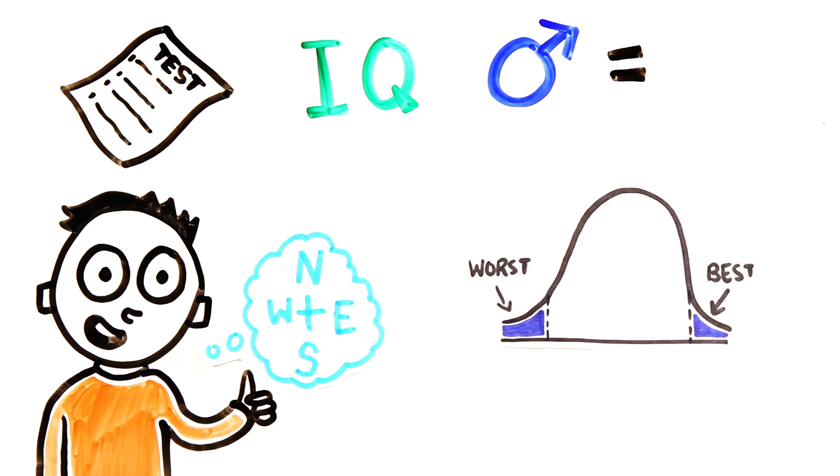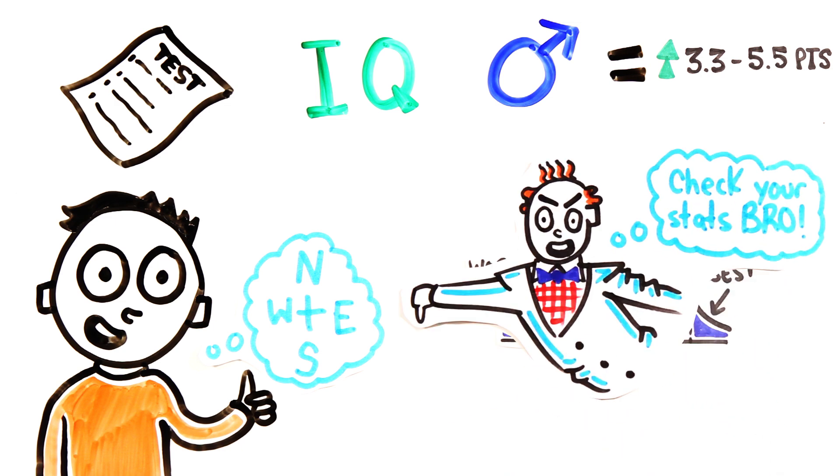One meta-analysis of 22 studies did find men to be 3.3 to 5.5 IQ points above women, but this study has been called into question by academics who found the methodology flawed.